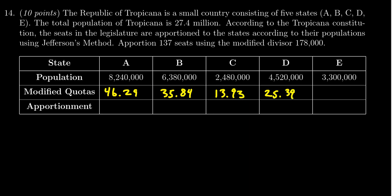And lastly, if you take 3.3 million divided by 178,000 that gives you 18.54. Now with Jefferson's method, once you have your modified quotas you're going to round each and every one of them down.